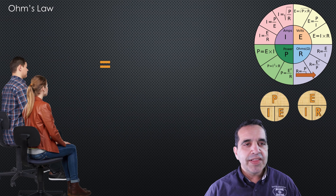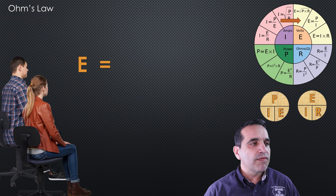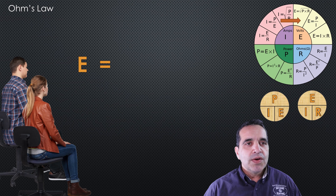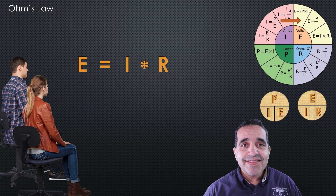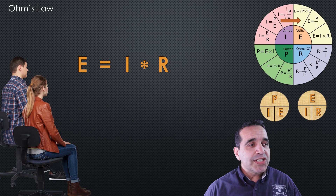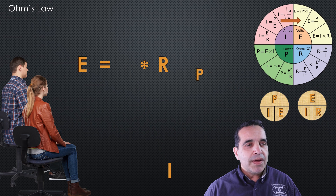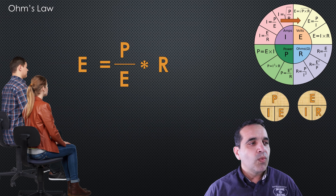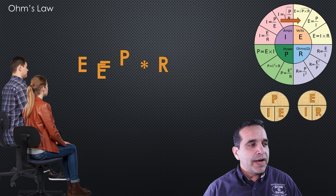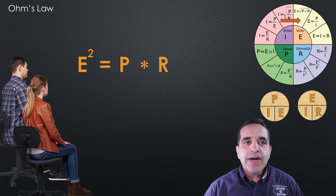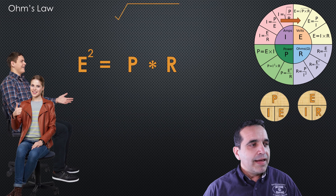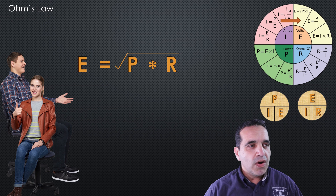Two formulas to go. Now we look at voltage — how do we solve for voltage if wattage and resistance are known? We start with E equals I times R. We have voltage and resistance, but we need to find wattage, and we have amperage we don't need. We replace I with P divided by E from the power wheel, square the voltage, and get E squared equals wattage times resistance. Square rooting both sides gives us the square root of power times resistance equals voltage.